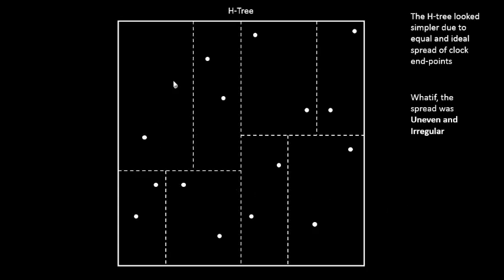So let's do that again. Now this section has got two clock endpoints, this one has two, this one has two, this one has two, and similarly for the other subsections.